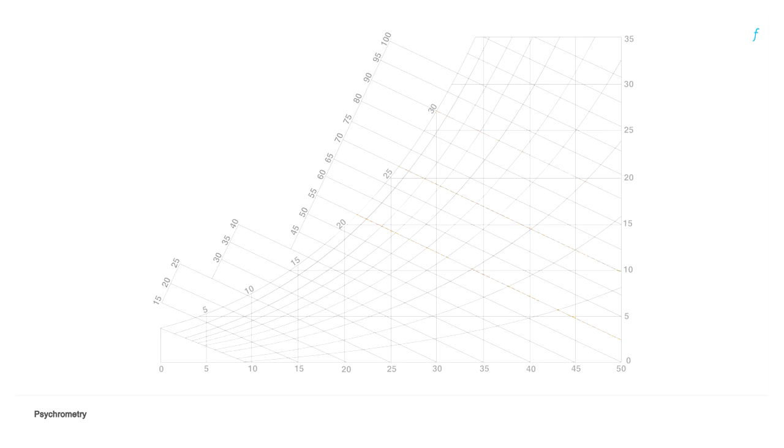Specific humidity is represented on the y-axis increasing as we go upwards on the chart. Constant relative humidity lines are curved and increase from right to left.